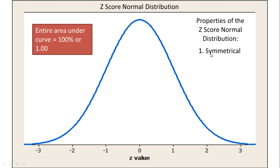Now the fact that it's symmetrical means that if we drew a line down the center of this distribution where it ends at zero, which is equal to the mean of the z-score distribution—a mean of zero—